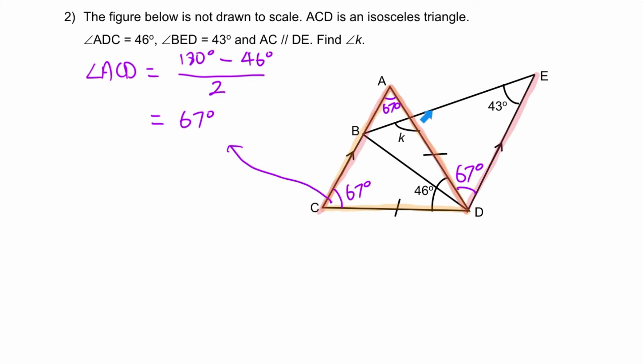Moving on, we can find this angle, which is angles in a triangle. We take 180 minus 67 minus 43, that will give us 70 degrees.